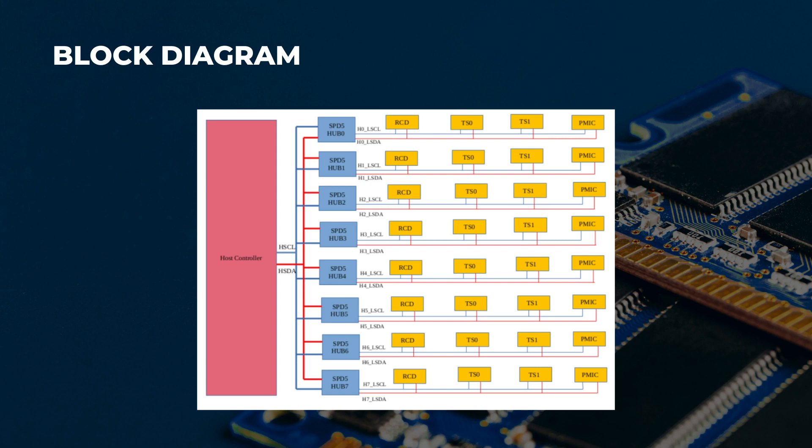HSCL and HSDA is the serial interface between the host controller and the SPD5 hub device. LSCL and LSDA is the serial interface between the SPD5 hub device and the local device.